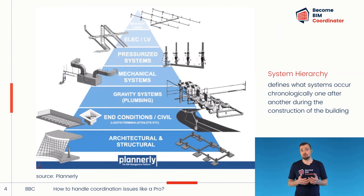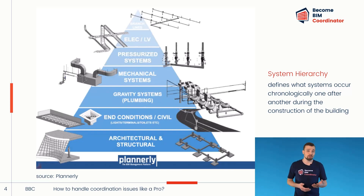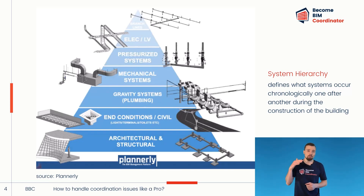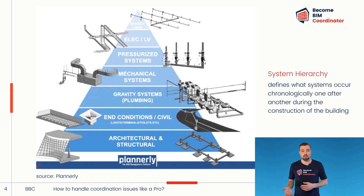The first concept is known as system hierarchy. The system hierarchy tells us which disciplines are fixed with little room for change and which can be altered more easily. The disciplines at the bottom are those with elements that are difficult or expensive to alter, while disciplines at the top have the greatest freedom of movement. Depending on the type of project, its requirements, and national regulations, you may have a slightly different order of hierarchy.